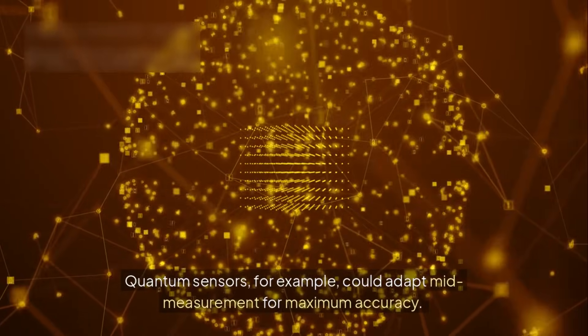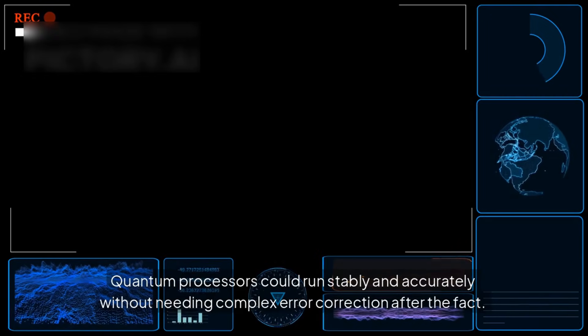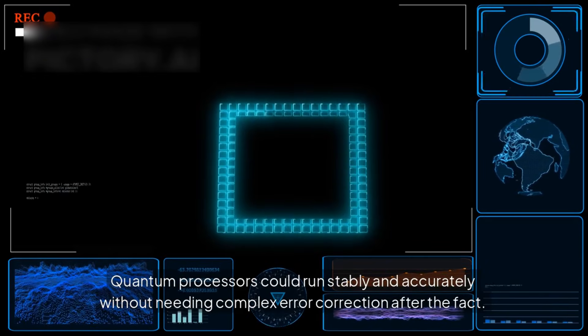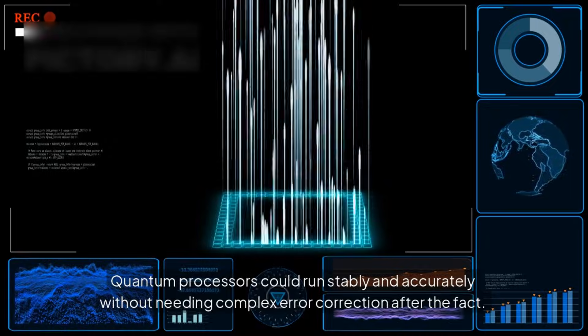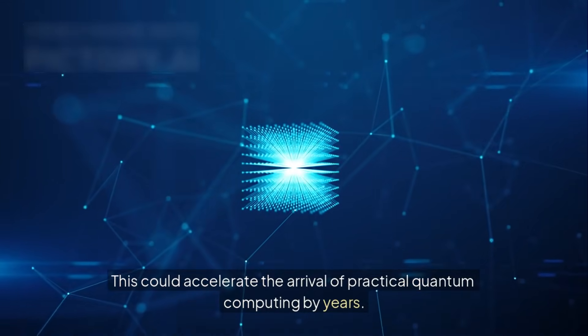Quantum sensors, for example, could adapt mid-measurement for maximum accuracy. Quantum processes could run stably and accurately without needing complex error correction after the fact. This could accelerate the arrival of practical quantum computing by years.